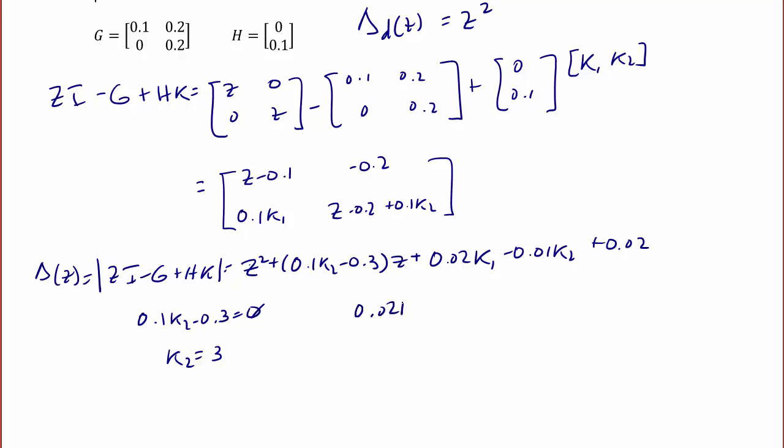And 0.02 K1 minus 0.01 K2 plus 0.02 equals 0. When we solve for K1, K1 is equal to 1 half.